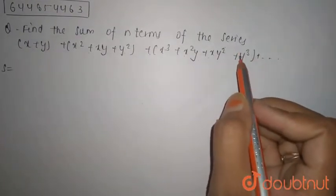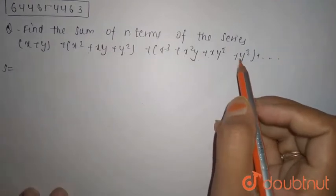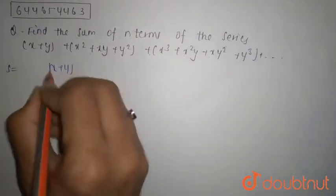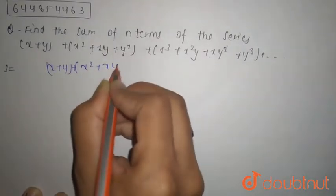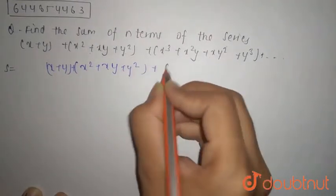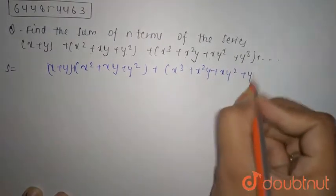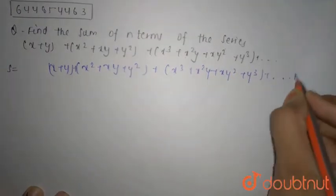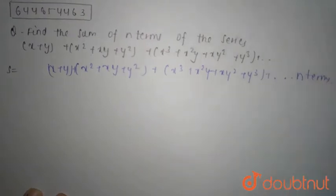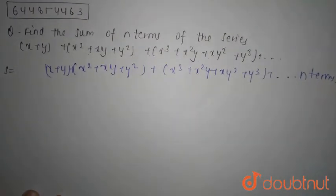We need to find the sum of the series. So first of all, the series is given as (x+y) + (x²+xy+y²) + (x³+x²y+xy²+y³) and so on up to n terms.